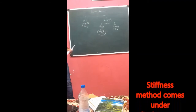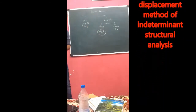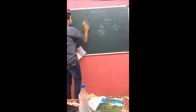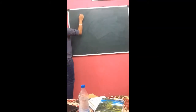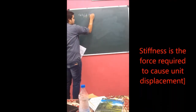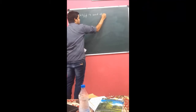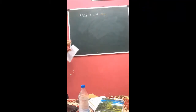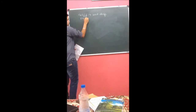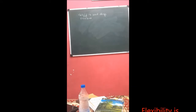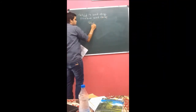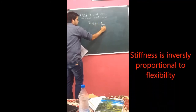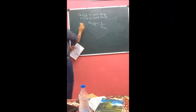So the stiffness method is the branch of structural analysis that comes under the displacement method of indeterminate structural analysis. Now, stiffness is nothing but the force required to cause a unit displacement — the key term here is unit displacement. Flexibility, by contrast, is the displacement caused by a unit force. So the stiffness should be inversely proportional to flexibility, which we are going to prove later.